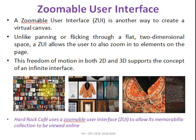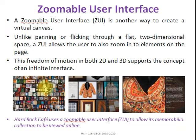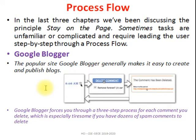The next type is the zoomable user interface. Many small-size images are given in a single page. If you zoom in, you can view a picture more clearly. This is applicable to both 2D and 3D pages. For example, Netflix uses it, and the Hard Rock Cafe website is a good example. Music websites also use it — all albums are shown in a single page; if you zoom in, you can see detailed information about each album.